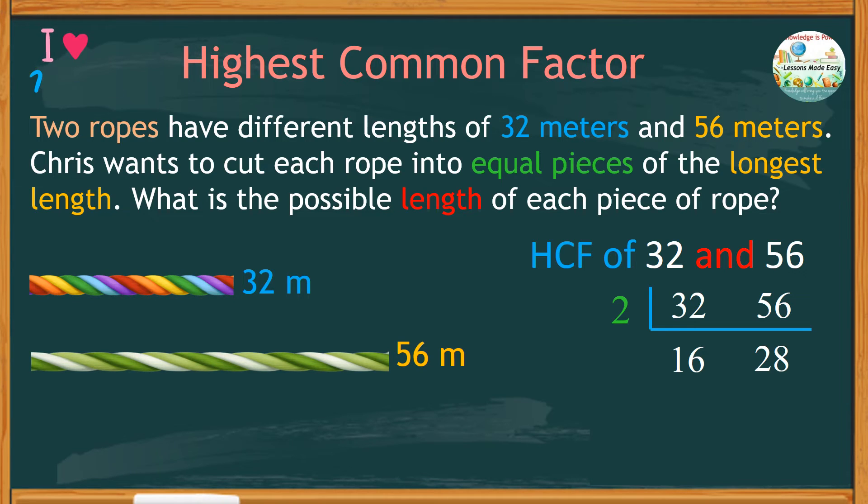16 and 28 can still be divided further. Again, we can use 2. Half of 16 is 8 and half of 28 is 14. For the third time, 8 and 14 can still be divided by 2, giving us a quotient of 4 and 7.